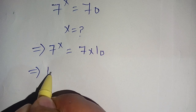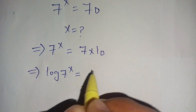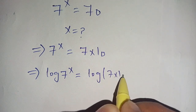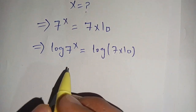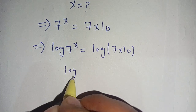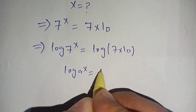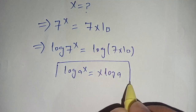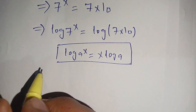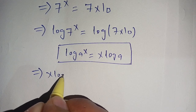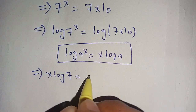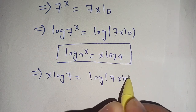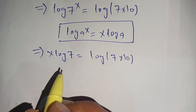Knowing this, the next step is to take a log on both sides. We get log of 7 power x is equal to log of 7 times 10. We know that log of a power x is equal to x times log of a, and using this identity on the left-hand side, we get x log of 7 is equal to log of 7 times 10.